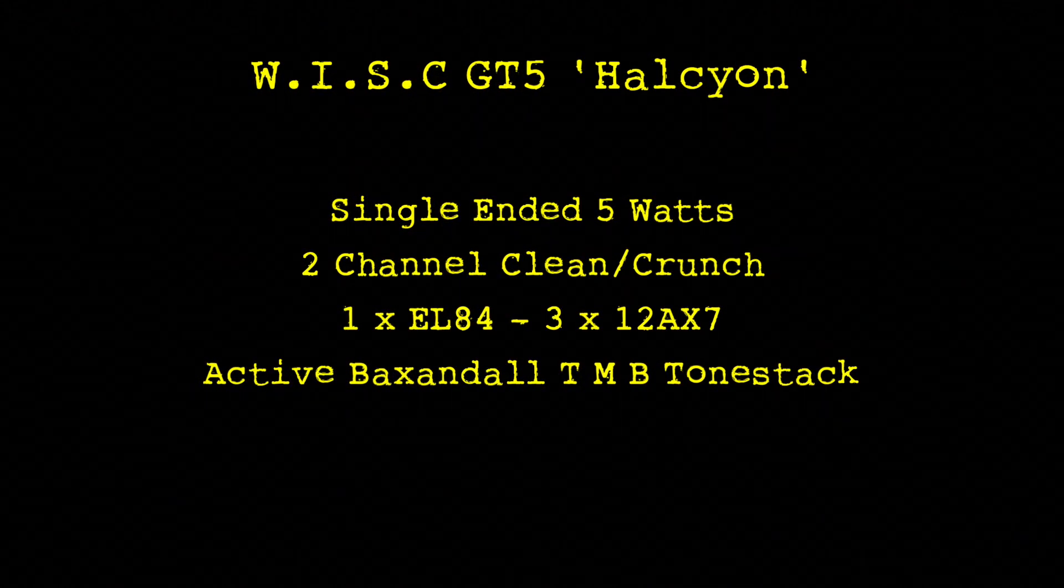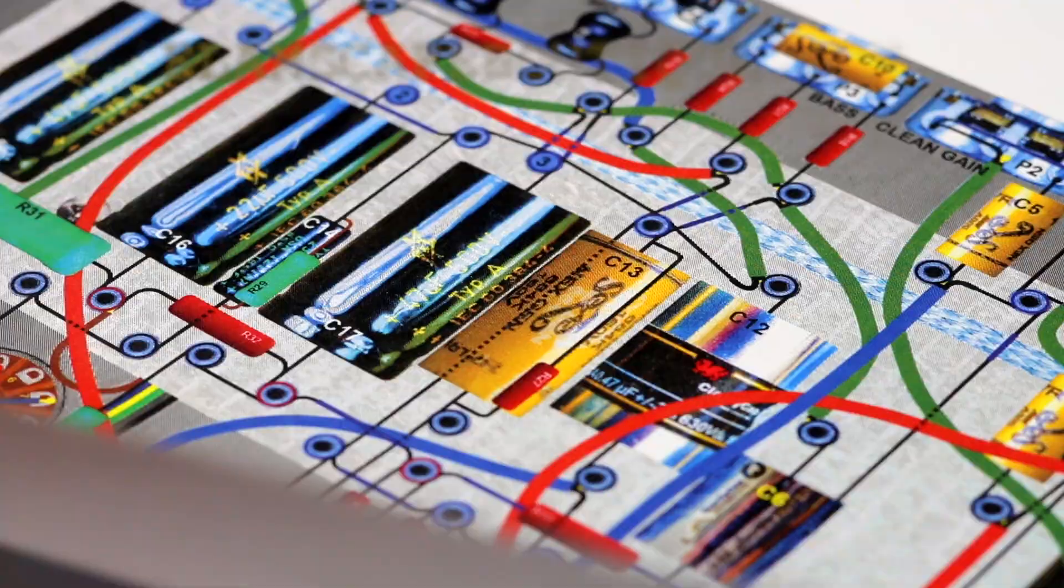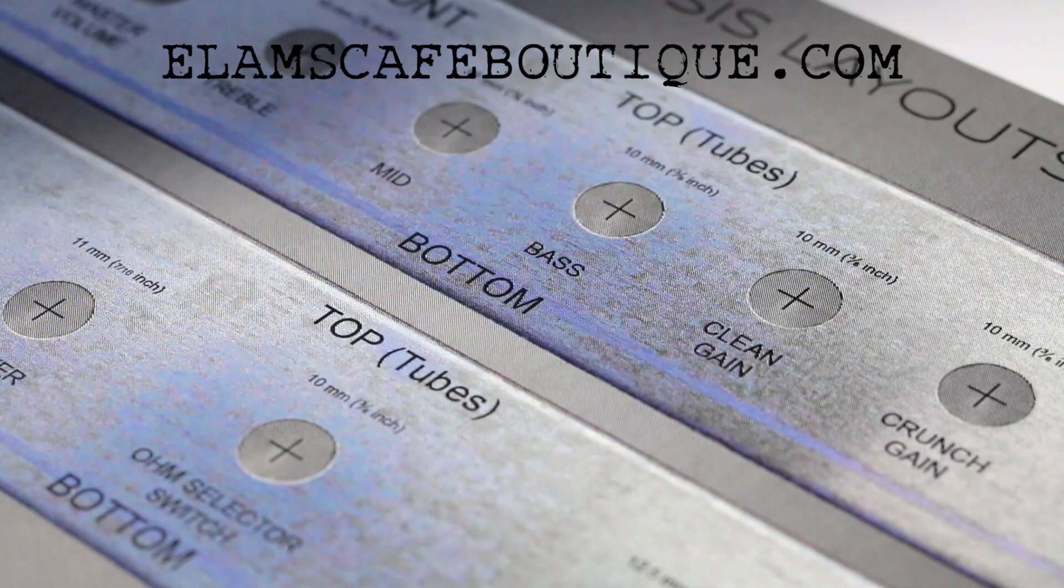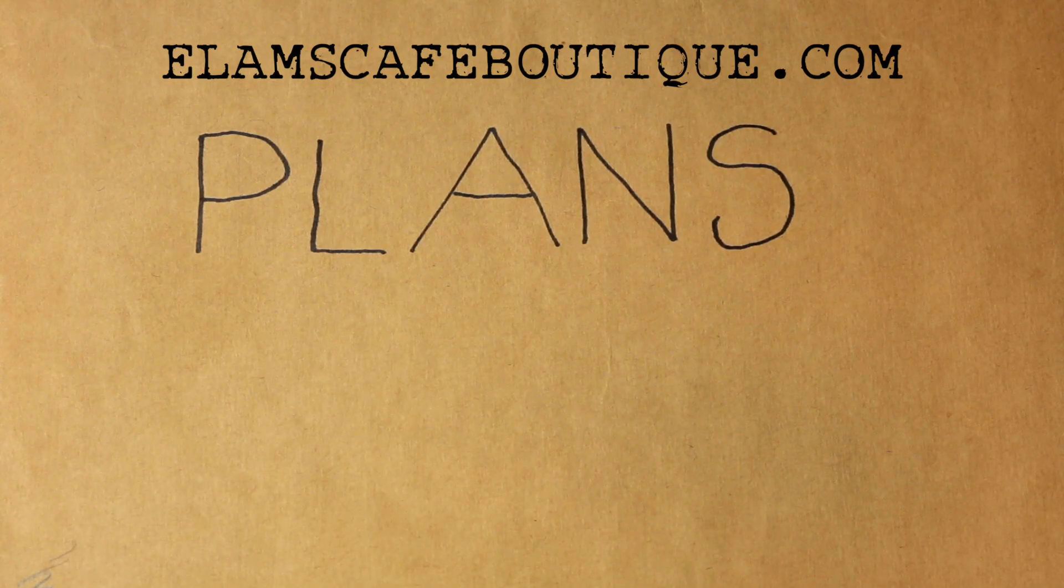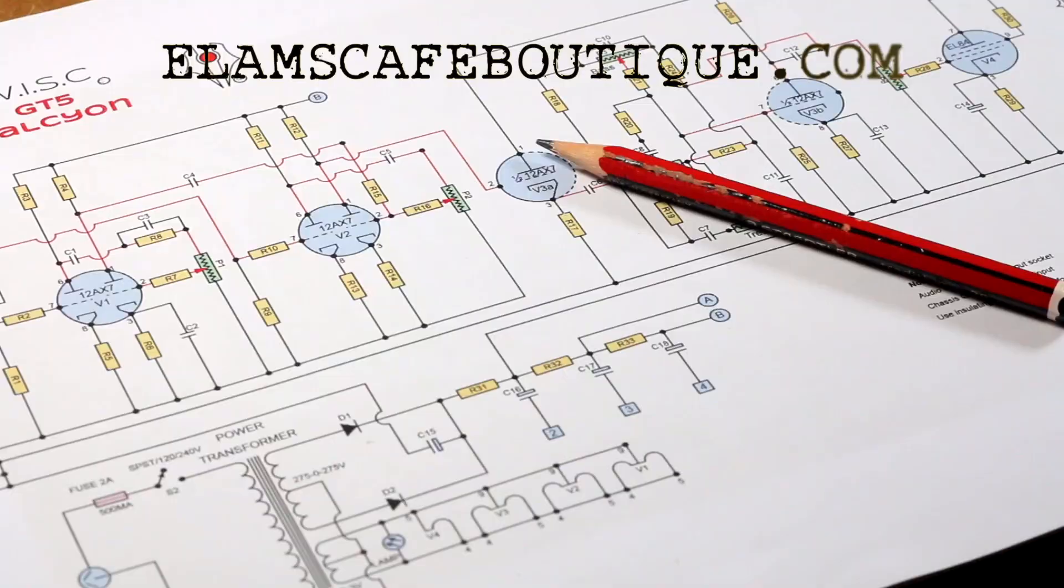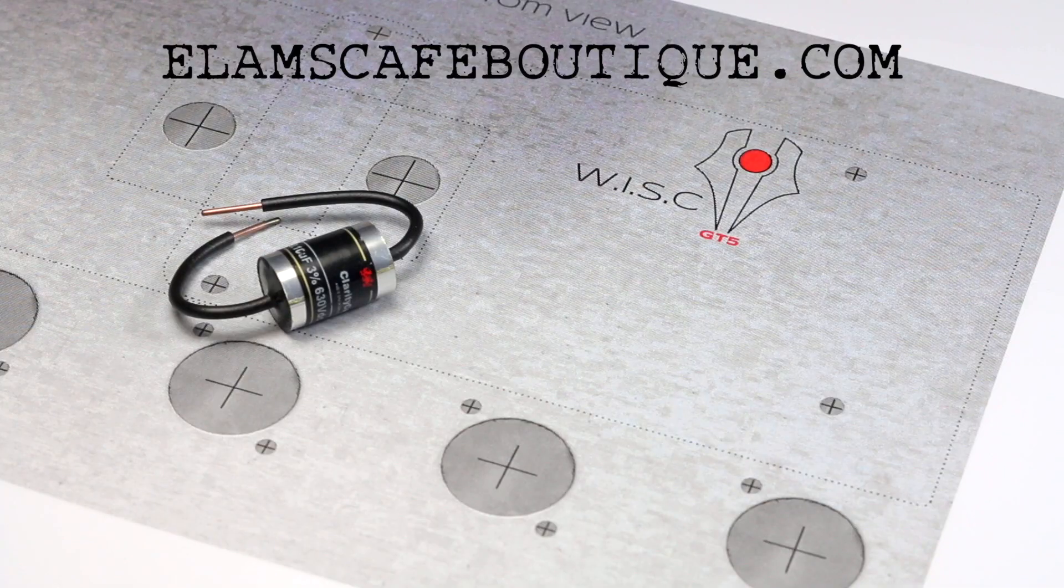This is a continuation of the GT5 Halcyon Build Series. To follow along, head to elamscafeboutique.com. There you'll find a whole bunch of plan packs that include schematics, layout diagrams and other high-quality JPEGs.